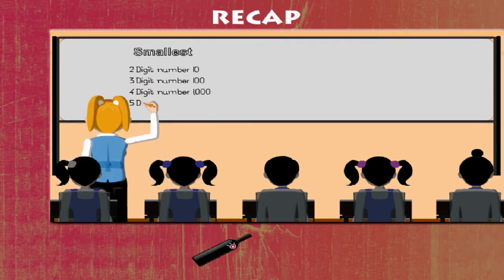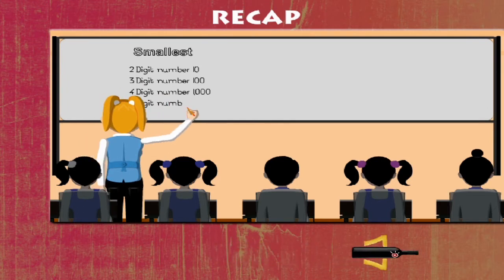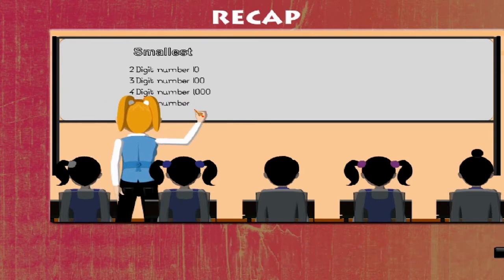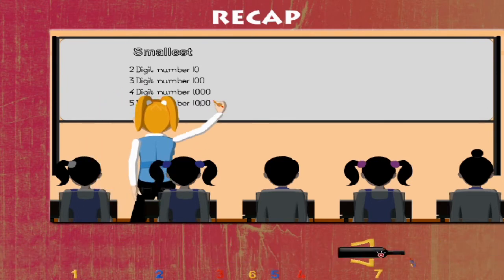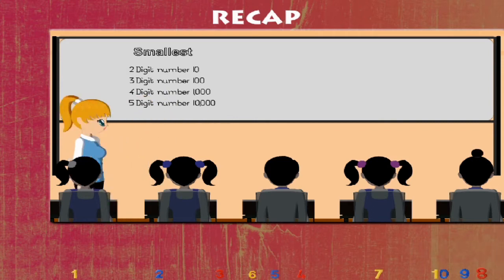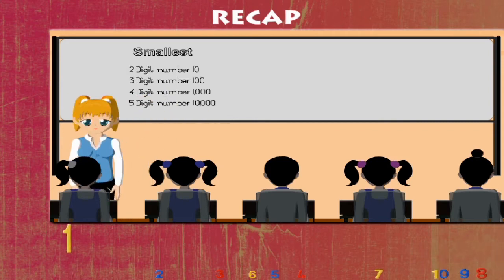What about the five digit number? Come on. Yes, it's ten thousand. That was good.